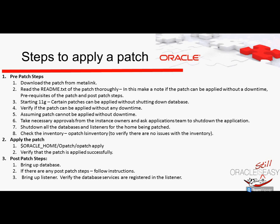How to apply a patch? There are several pre-patch steps we need to go through before we actually apply a patch. The first is to download the patch from MetaLink. Once you download the patch, it's extremely important to go through the readme.txt. Never apply a patch without reading the readme.txt. Every patch has special instructions and every patch is different. You need to make sure that you go through the readme of each and every patch that you are going to apply.